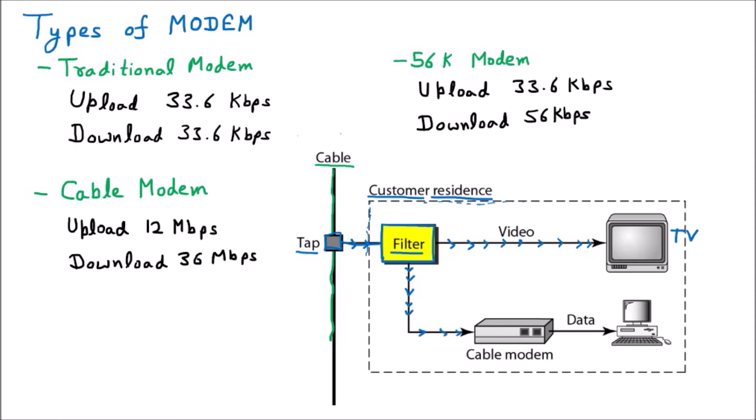From the filter, another line goes to the cable modem, which converts the signal into data. Data here means the internet, so your computer receives internet services. This modem serves two purposes: one, watching all the channels on TV, and two, surfing the internet. That's why this filter is applied — it fulfills both purposes.